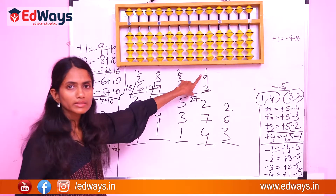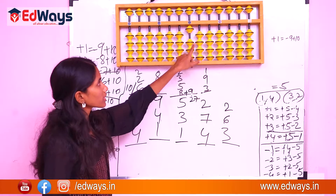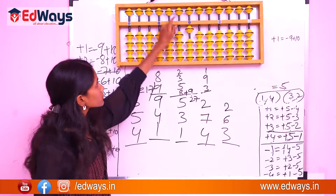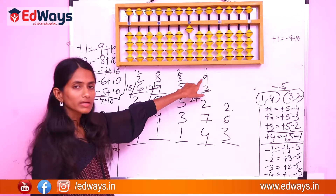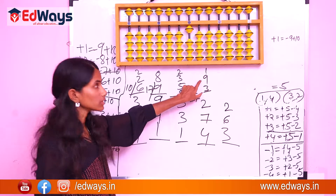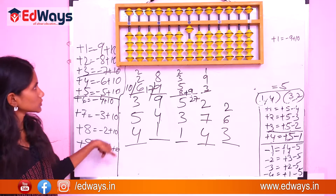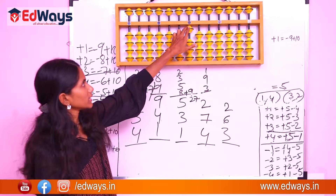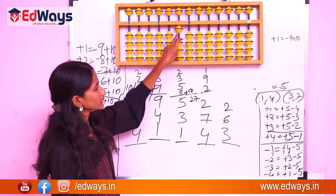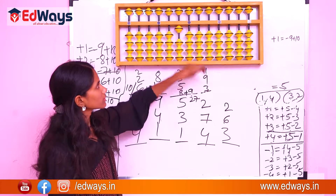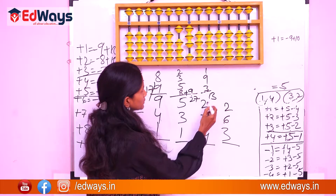Example: 1 plus 9 plus 3. For plus 9: only 5, 6, 7, 8 beads are available, so 9 is not directly available. 9's complement is 1, so subtract the complement and add 10. That gives 10, then add 3 directly. The answer is 13.